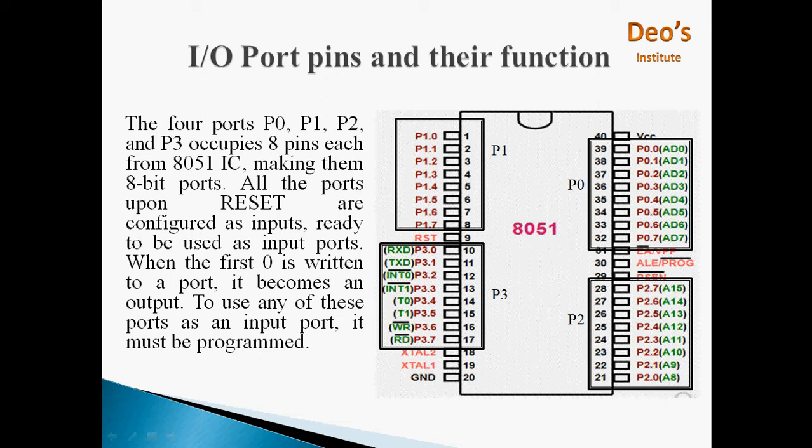All the ports are configured as input ports by default, ready to be used as input ports. When the first 0 is written to a port, it becomes an output. To use any of these ports as an input port, it must be programmed. Now, we will see IO PORTS one by one.